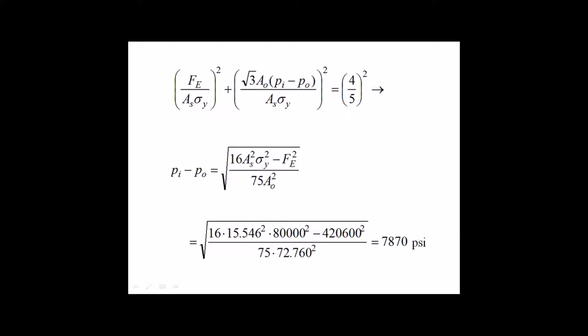At the surface, the effective force is the same as the hanging weight since the inside and outside pressures are zero. Without bending stress, we know that the maximum von Mises stress will occur at the inside wall of the casing. In the first equation, we state that the yield circle is 80% of the yield value and this corresponds to a design factor of 1.25. In the equation shown below, we solve for the pressure drop corresponding to 80% of yield and get 7870 psi.